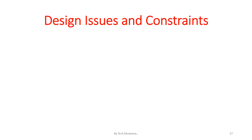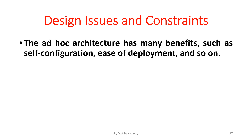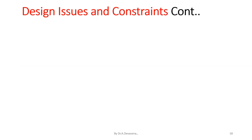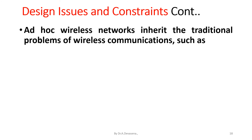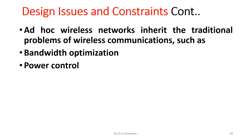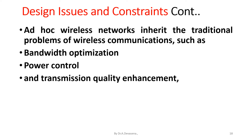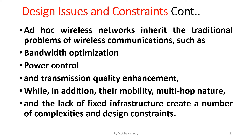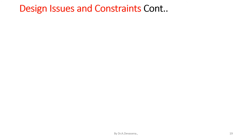Now we see the design issues and constraints. The ad hoc architecture has many benefits such as self-configuration and ease of deployment. However, this flexibility and convenience come at a price. Ad hoc wireless networks inherit traditional problems of wireless communications such as bandwidth optimization, power control, and transmission quality enhancement. The mobility, multi-hop nature, and lack of infrastructure create a number of complexities and design constraints. We will now see these design issues and constraints one by one in detail.